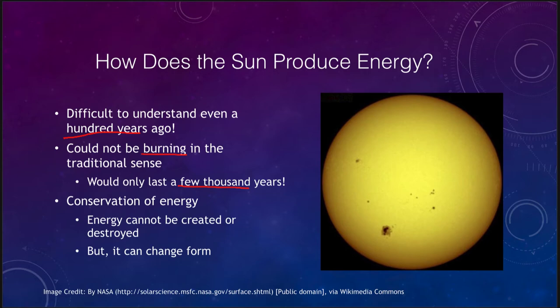We also know that there is what we call the conservation of energy, and that energy cannot be created or destroyed but it can change its form. So we can convert energy from one form to another. For example, we can convert gravitational energy into heat energy. Burning is one way of changing forms of energy from chemical potential energy into heat energy.